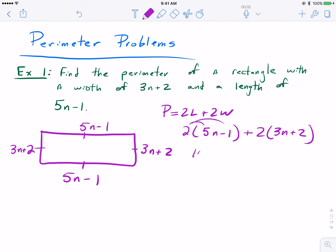Now distributing, we'll get 10n minus 2, and we'll get 6n plus 4.